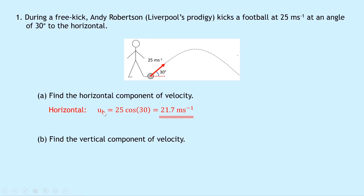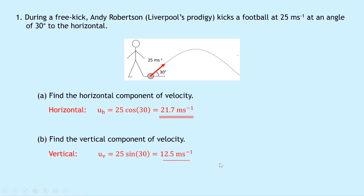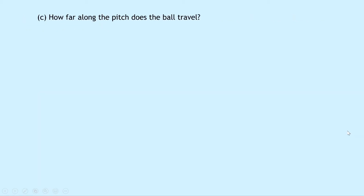Part b says find the vertical component of the velocity. To find the vertical component, remember we use sine, so u_v equals 25 sine 30, which equals 12.5 meters per second. Here we're using the subscript v to mean vertical.